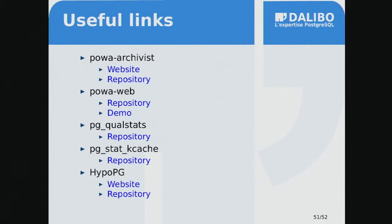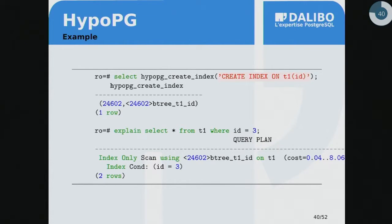On HypoPG: the hypothetical index is visible only within the current session and only for EXPLAIN, not EXPLAIN ANALYZE, because the index isn't real. You use a function called hypopg_create_index, give it a DDL, and it returns a generated name for the index used internally. You can check in the plan whether it would be used. To remove it, use hypopg_drop_index. Everything is local to your session and doesn't impact the rest of the system in any way. It doesn't consume any resources to create — it's just an entry in the system catalog for planning purposes.